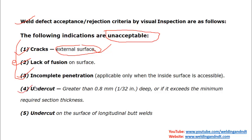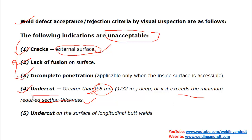For undercut, there are specific conditions. If the depth of undercut is greater than 0.8 mm, that undercut shall be rejected. Additionally, the undercut depth shall not exceed the minimum required section thickness, which is calculated as per ASME B31.1 Section 2. So undercut must not exceed 0.8 mm or the minimum required thickness. This applies to welds other than longitudinal butt welds.